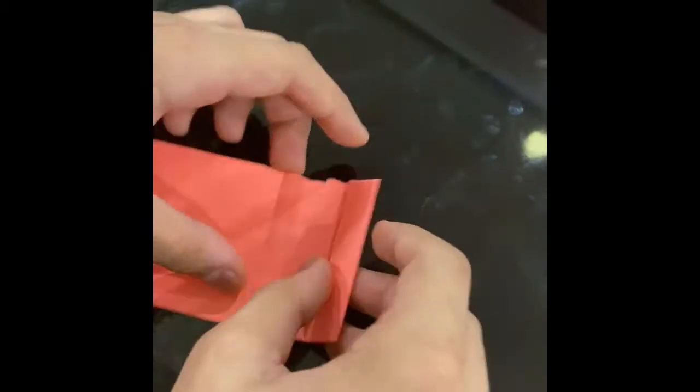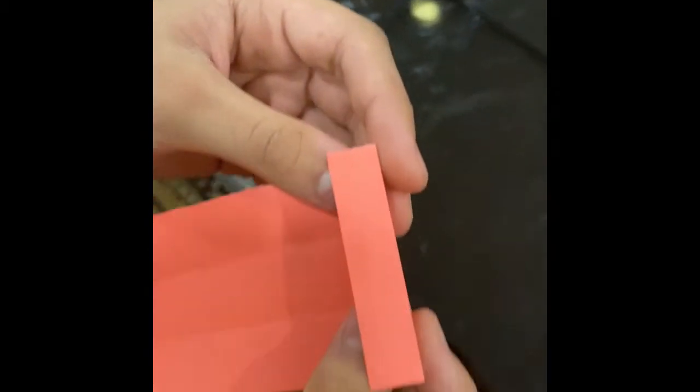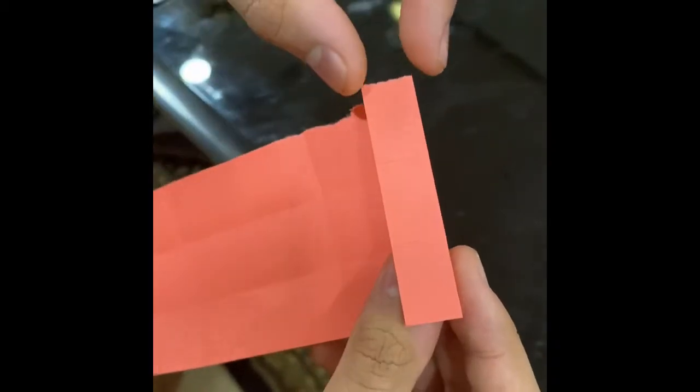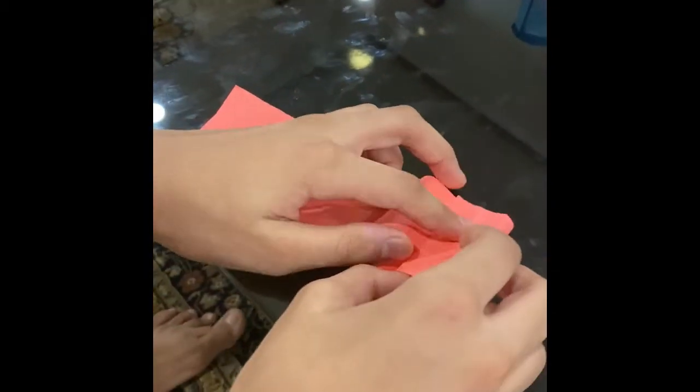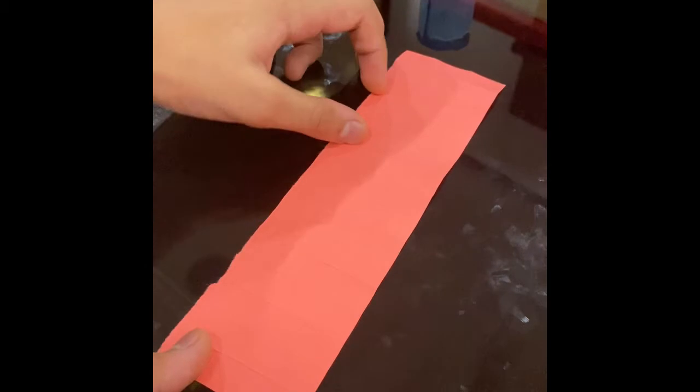So when you get it this much, that means like this much everywhere, which is 16 small columns. Now I'll be doing it. So now I've completed 16 parts. I think you can see that now.